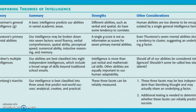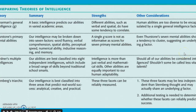Here is a summary chart — a bit cut off but still visible — showing Spearman's general intelligence, Thurston's primary mental abilities, Gardner's eight, and Sternberg's triarchic. Make sure you know the theories and a little about each of them.